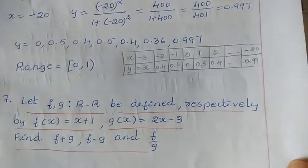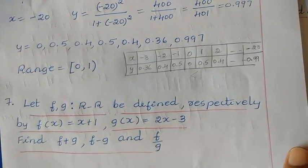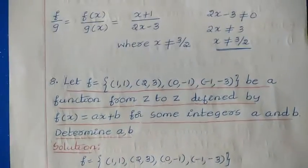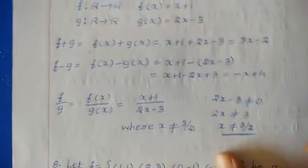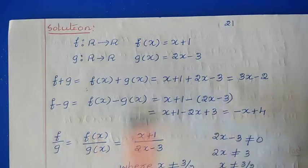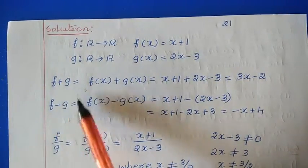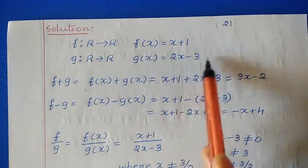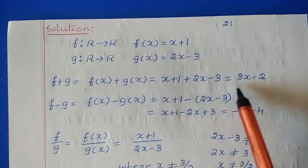Next, question 7: let f, g : ℝ → ℝ be defined respectively by f(x) = x + 1 and g(x) = 2x - 3. Find f + g, f - g, and f/g. Here they have given two functions f and g, defined on real numbers. For f + g: f(x) + g(x) = (x + 1) + (2x - 3) = 3x - 2.